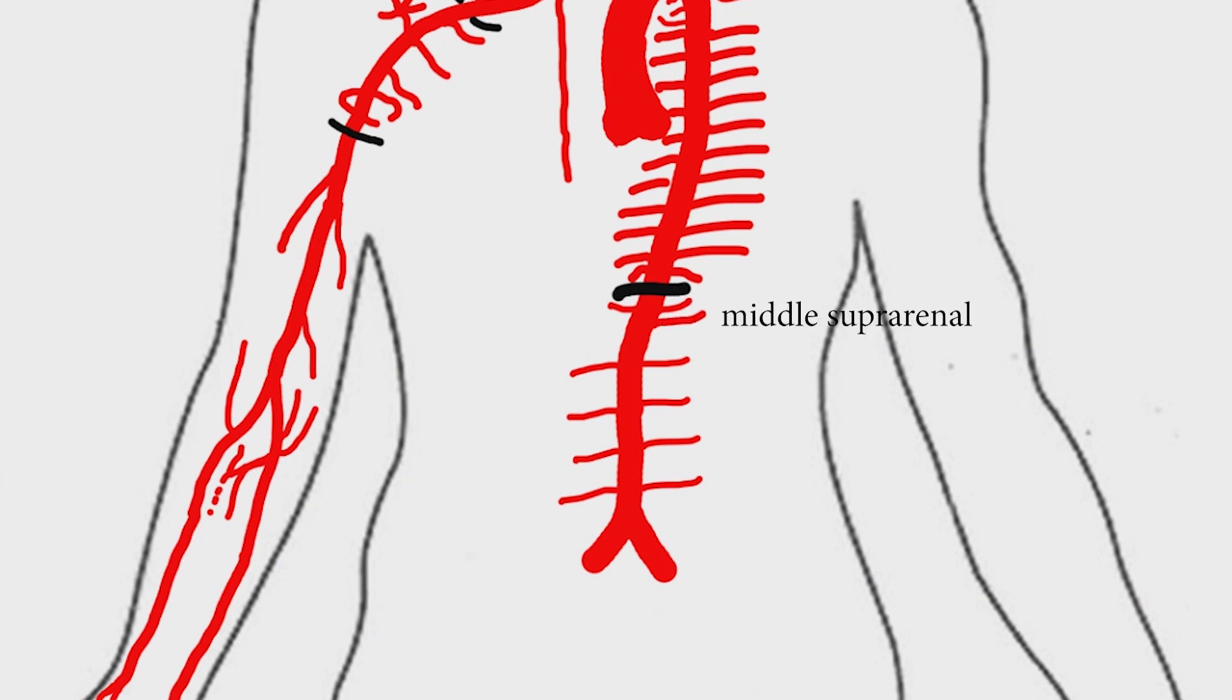Next we'll see the three paired lateral visceral branches: middle suprarenal artery, renal artery, and gonadal arteries—testicular arteries in male and ovarian artery in females.